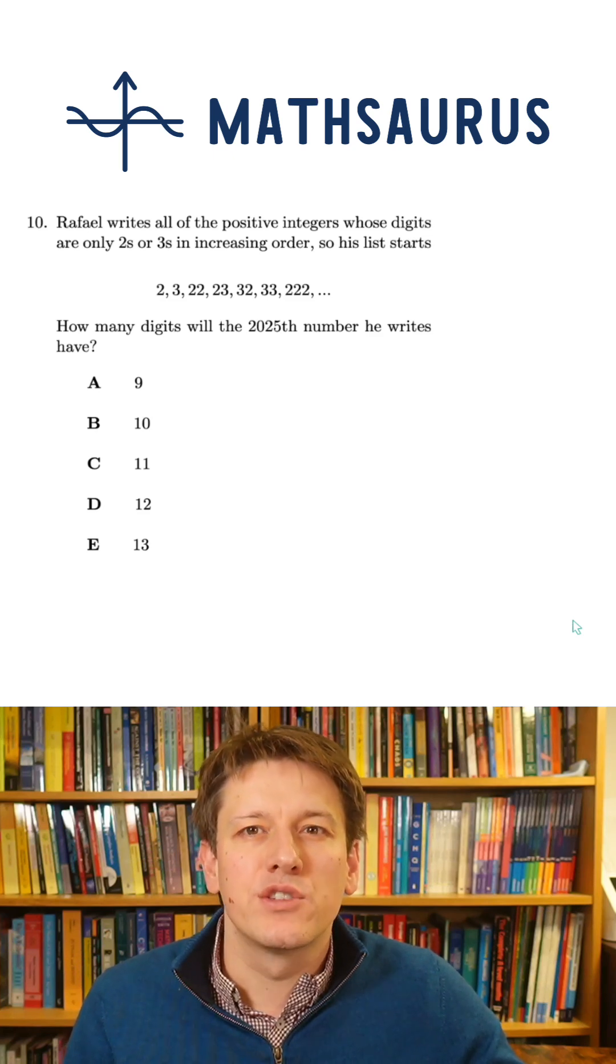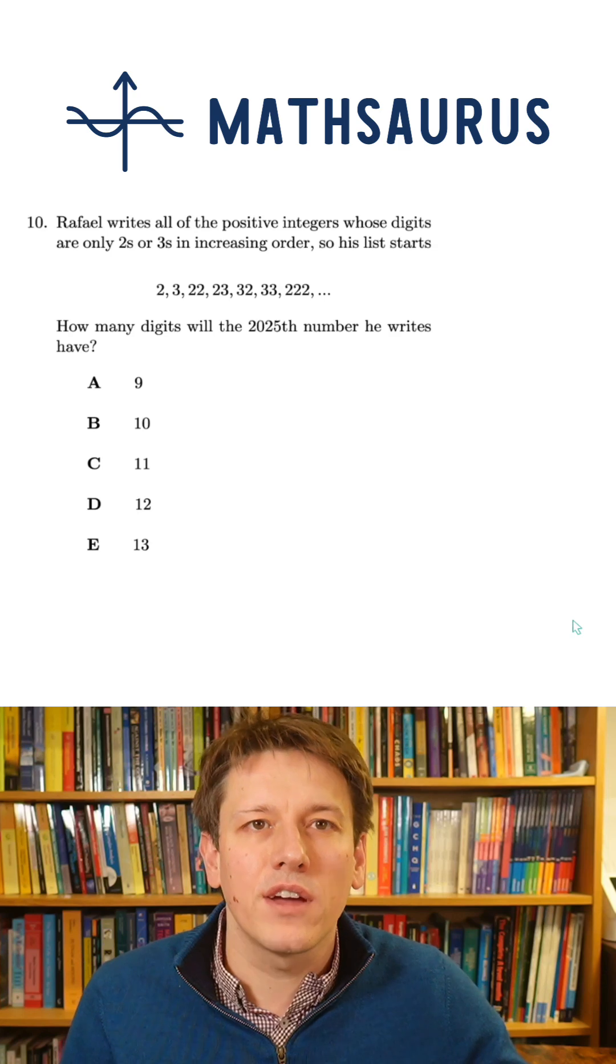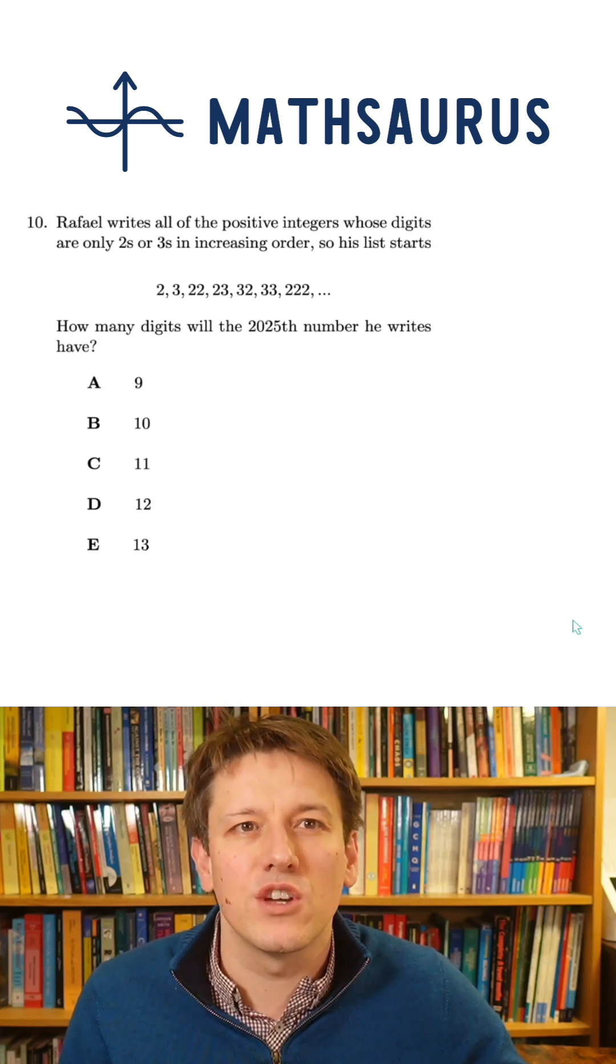So his list starts 2, 3, 22, 23, 32, 33, 222, and so on.